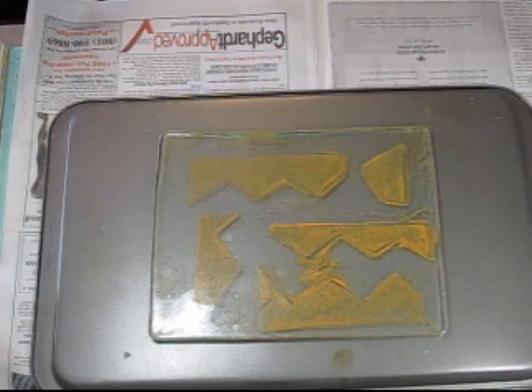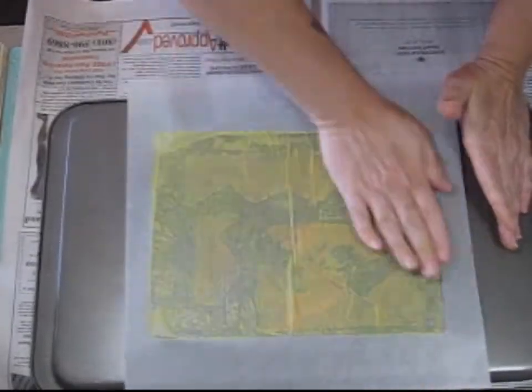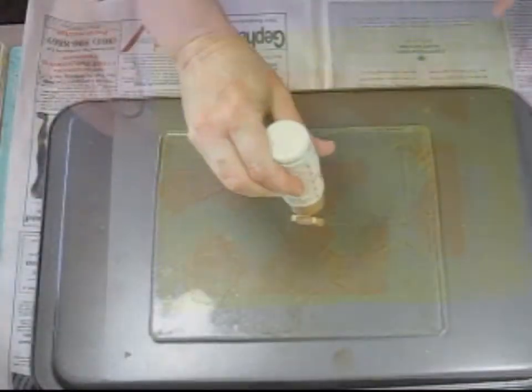And you can see it's a little bit different. Now you can remove the pieces that are on there. And now you can get another print from that. So it's going to be the negative, the reverse of what you already had.